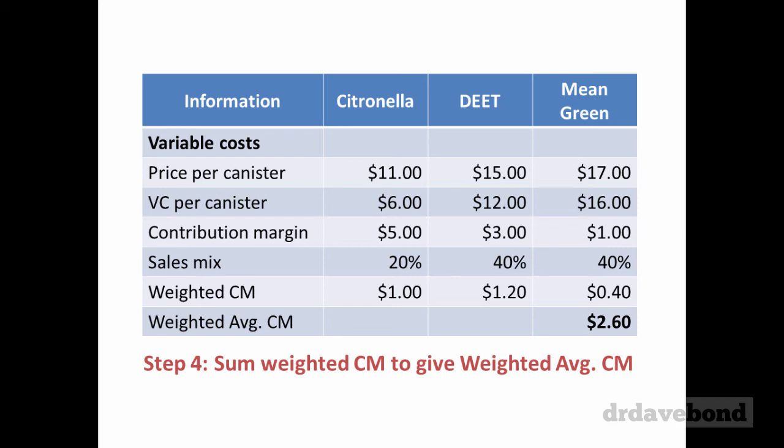The last step is to simply add up each of those weighted contribution margins. So the $1, the $1.20 and the $0.40 gives you a weighted average contribution margin of $2.60. For each unit sold, there's a weighted average contribution margin that will provide $2.60 toward paying off fixed costs — assuming the 20-40-40 sales mix.